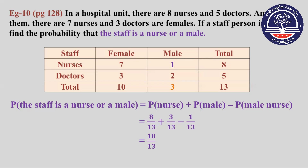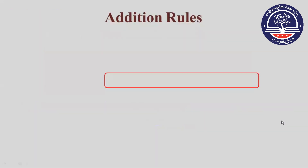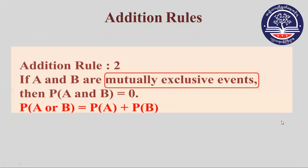That is Addition Rule 2. Addition Rule 2: if A and B are mutually exclusive events.